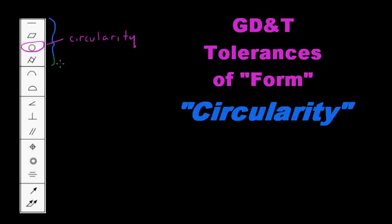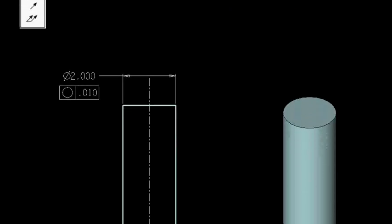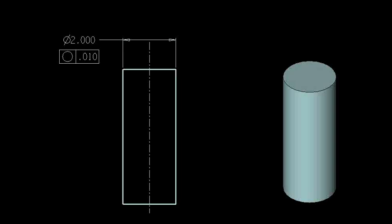And this is sometimes called roundness. Now, circularity in its simplest form, we will use an example of a cylinder. So here we have a cylinder, this isometric view, and in the side view of the cylinder,